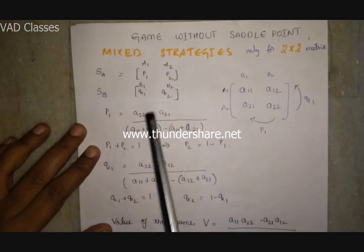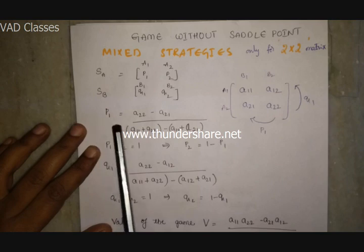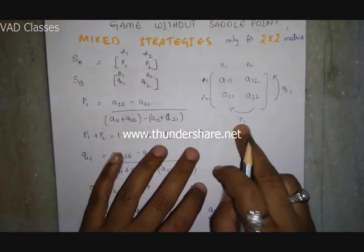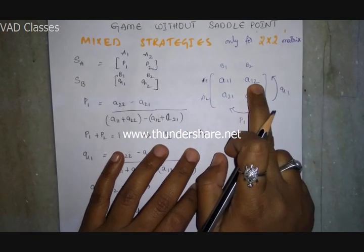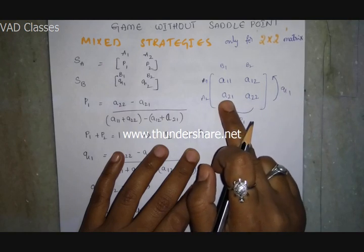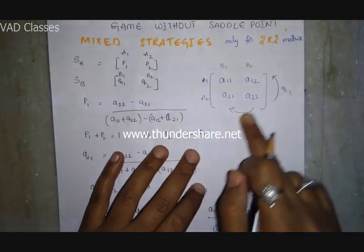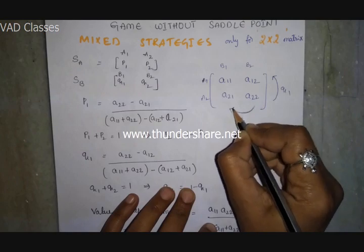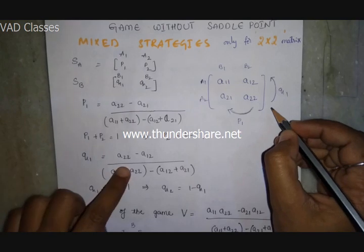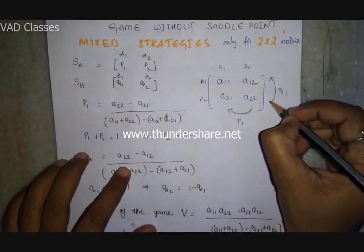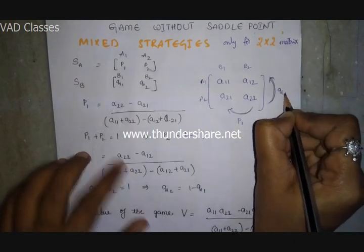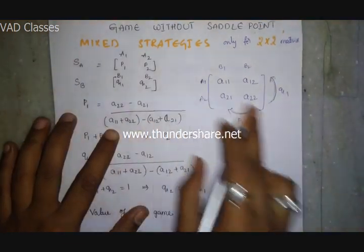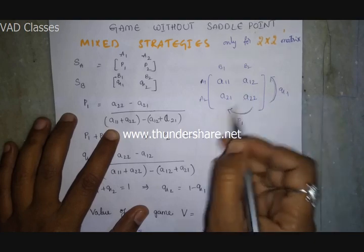The standard formulas for mixed strategies: for player A, P1 = (A22 minus A21) divided by the denominator, where the denominator is A11 + A22 minus A12 minus A21 — that is, the sum of diagonal (cross) elements minus the other cross elements. Similarly Q1 = (A22 minus A12) divided by the same denominator. Here A11 is first row first column, A12 is first row second column, A21 is second row first column, A22 is second row second column.